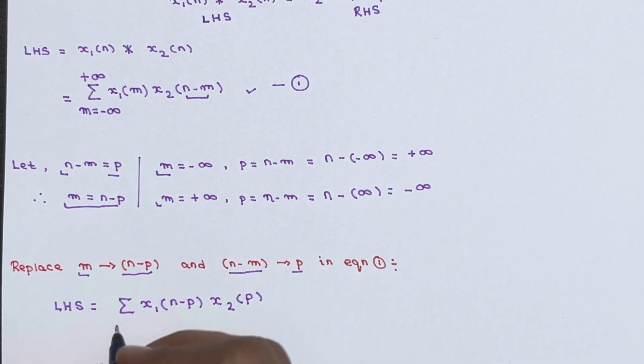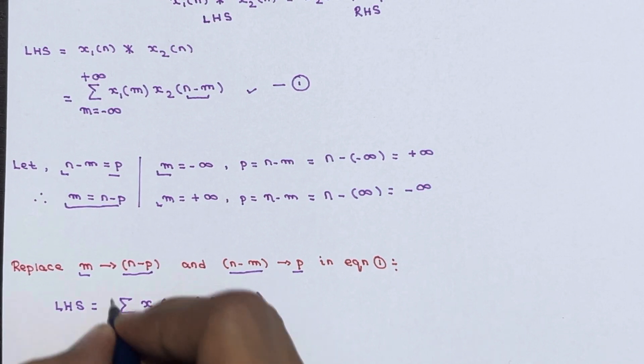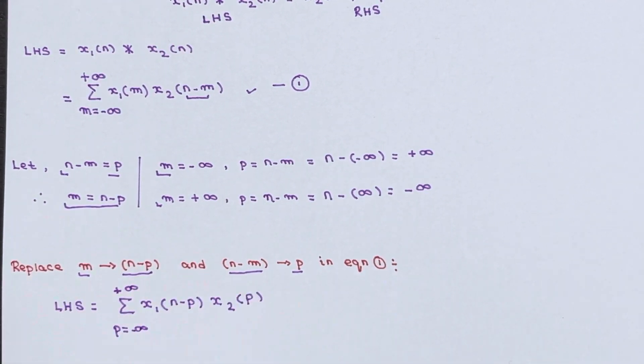Now p is there, so the limit of p we already calculated. So p will go from minus infinity to plus infinity.